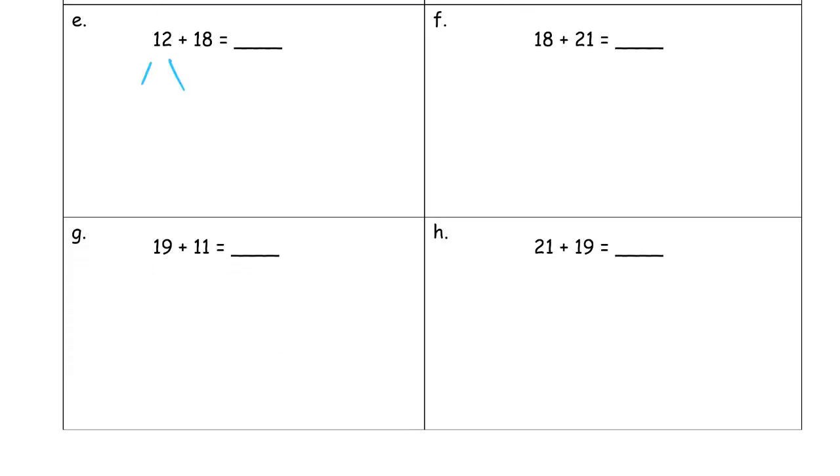And it's going to happen again here. Add the 1s first. That's 18 plus 2, which is 19, 20. And then add the 10. 20 plus 10, 30.